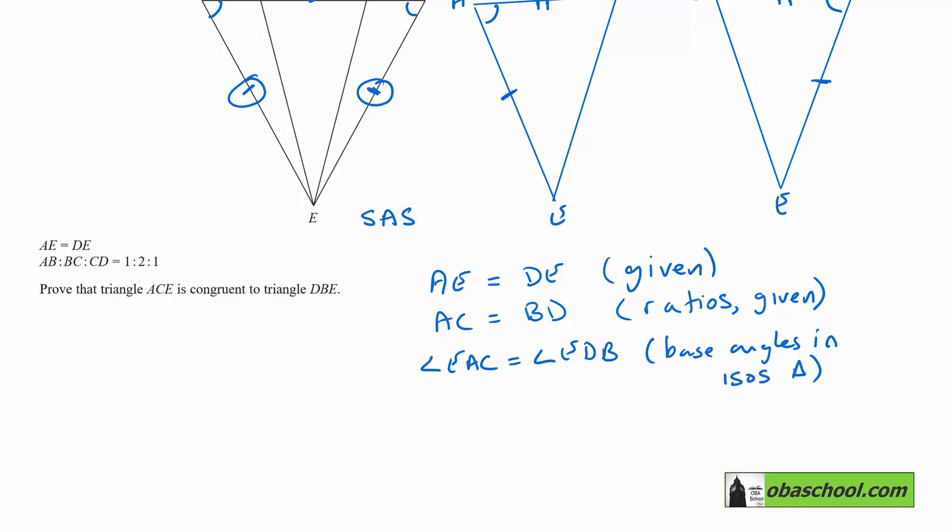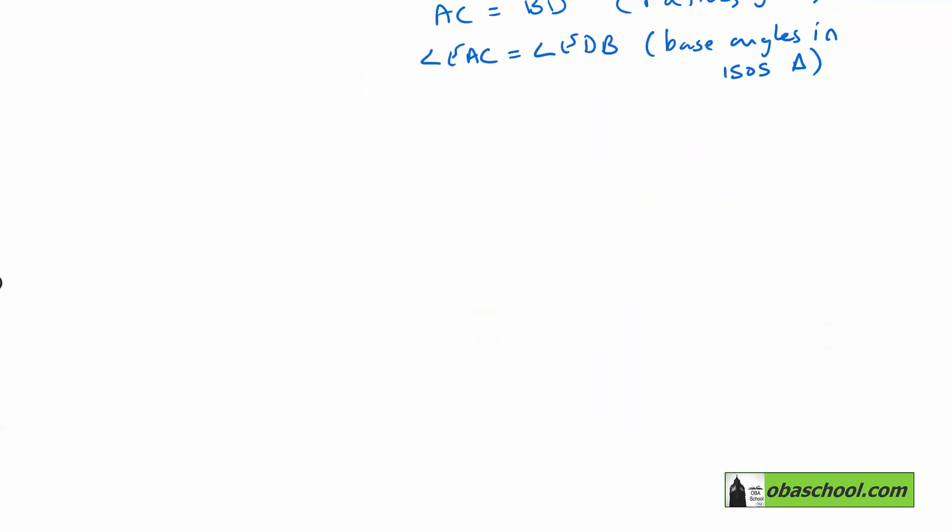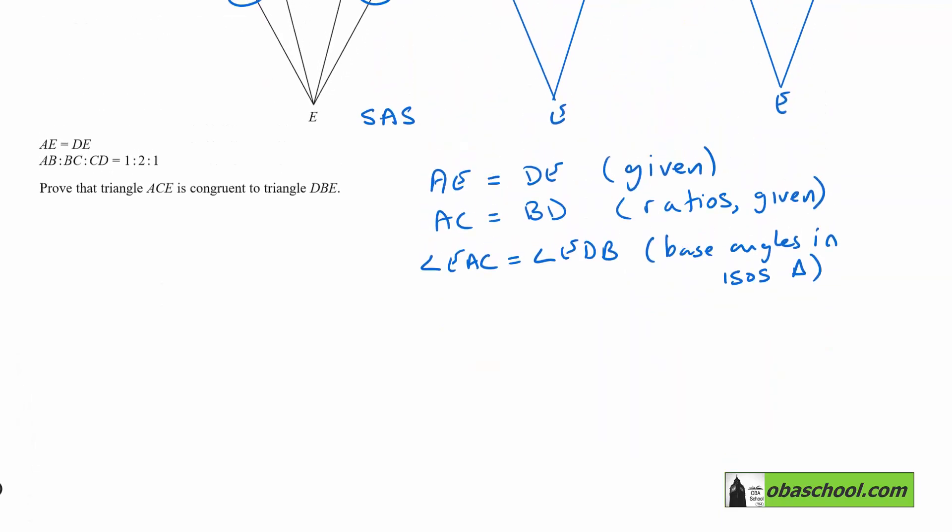And therefore we can say that triangle ACE is congruent to triangle DBE. And the reason we worked out was side angle side.